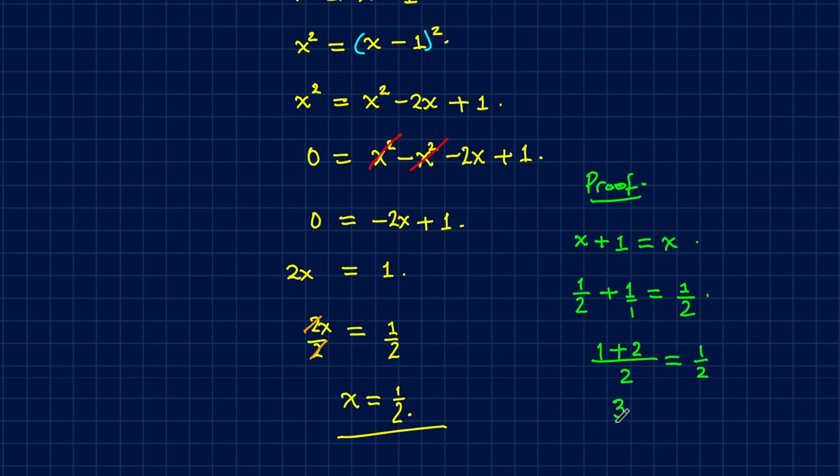So when we add the numerator, we have 3 over 2 equals 1 over 2. Of course definitely not. This is not equivalent. So this is not the solution.